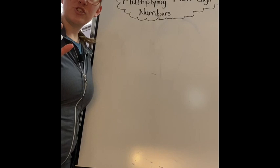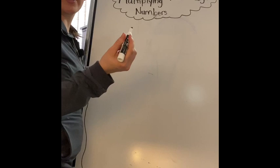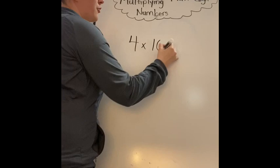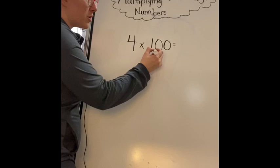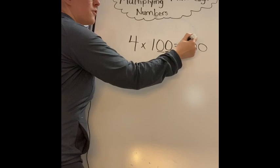We started off the other day by doing tens, hundreds, thousands. You might have got an example like 4 times 100 equals. You learned a little trick in the video where you can just look at how many zeros there are, write down those zeros, and then use these two numbers. 4 times 1 equals 4, therefore my answer must be 400.